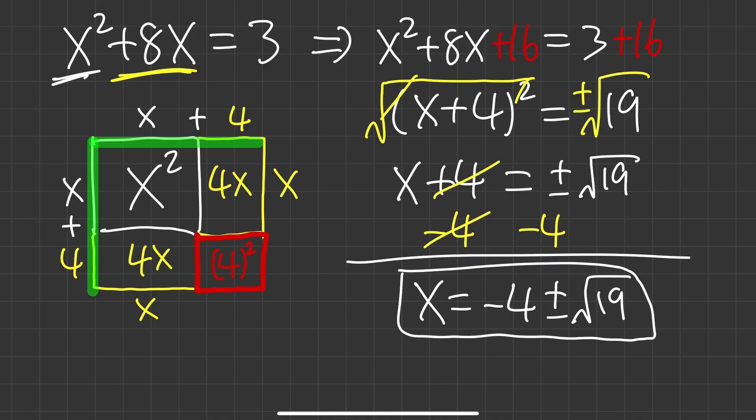Notice we have a square root in the answer — that means the original equation was not factorable using the usual method. This is how you solve a quadratic equation by completing the square.